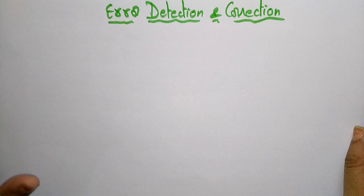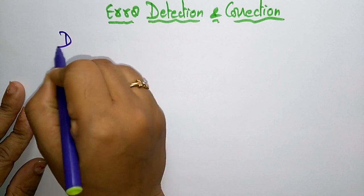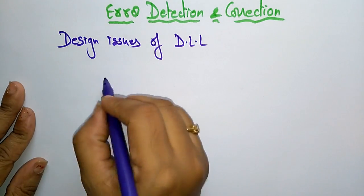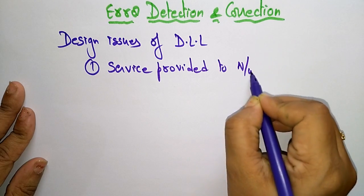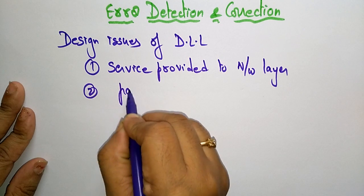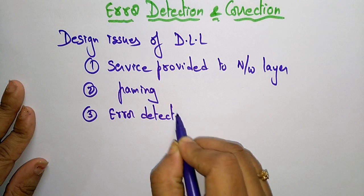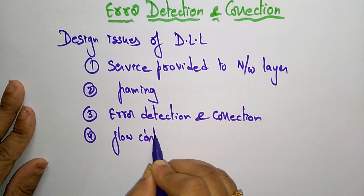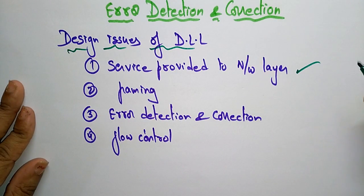Welcome back. Moving to the next topic in data link layer design issues: error detection and correction. I already discussed two design issues of the data link layer — the service provided to the network layer and framing. Now let us see error detection and correction, and the next one is flow control. These are the four main design issues of the data link layer. So far we discussed the service provided to network layers and I explained about framing. Now let us see error detection and correction.